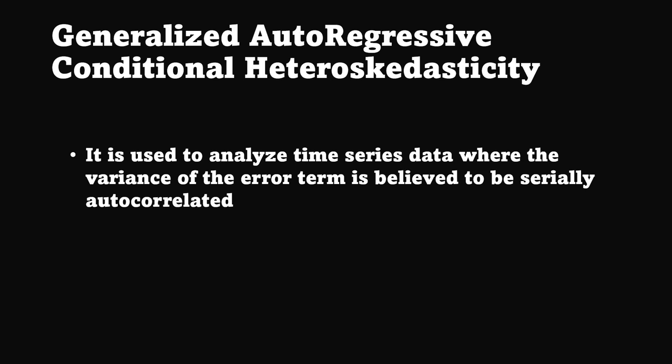We use those different variances to predict today's variance. This is similar to the ARMA model, where we take lags of certain values on the basis of which we predict how previous lags impact today's value. But here, we will be predicting the variance of a time series dataset on the basis of its lagged variances. It is used to analyze time series data where the variance of the error term is believed to be serially autocorrelated.